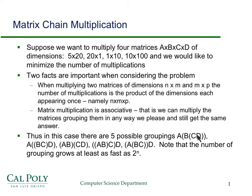Here we multiply C times D first, then multiply by B, then finally multiply by A. Whereas here, we multiply B and C first, then we multiply that result by A, and then finally by D.